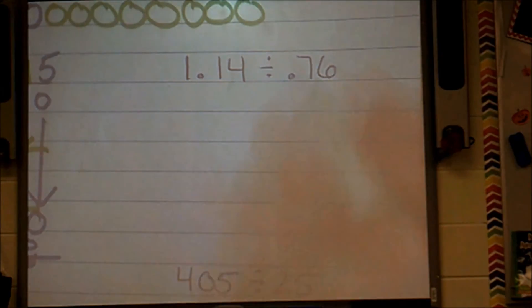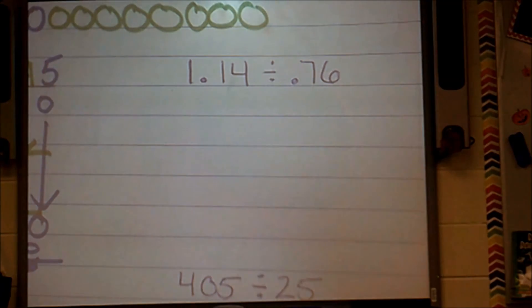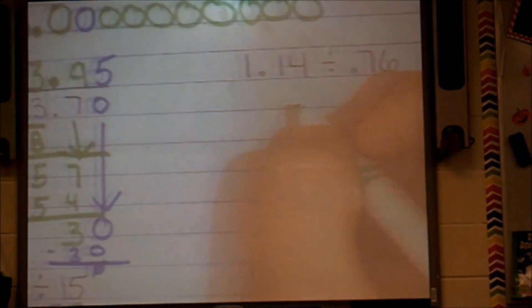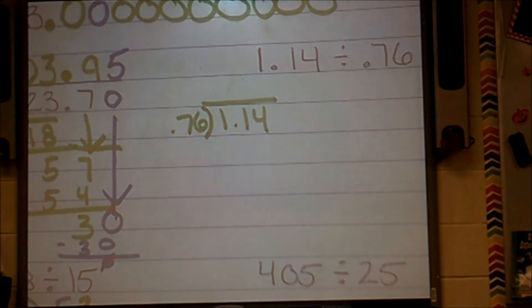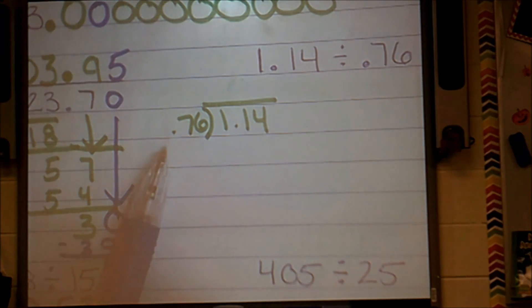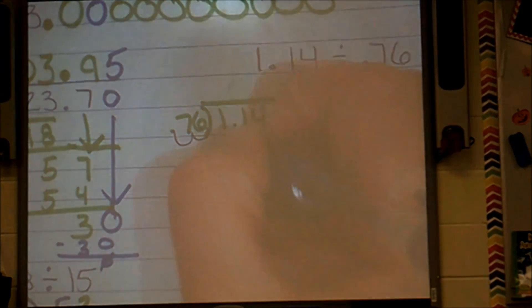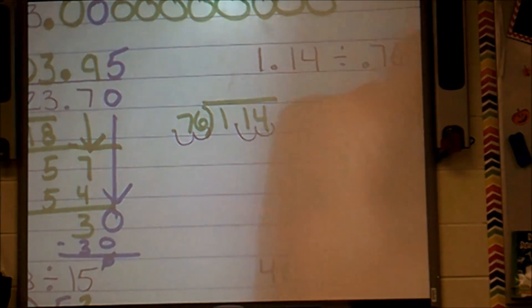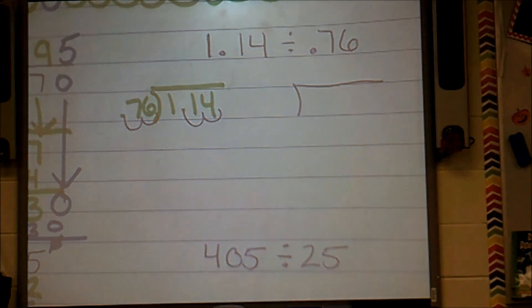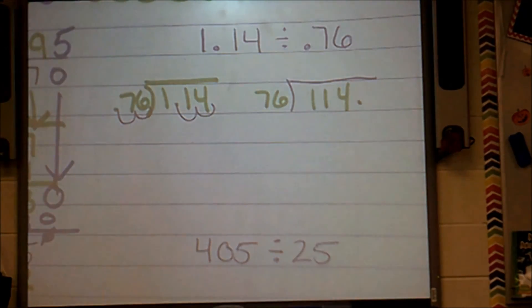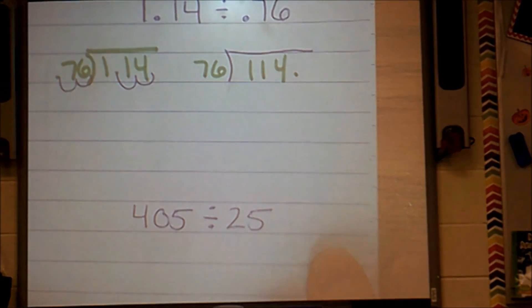And now I'm going to remember, my first number goes inside my cave, so my problem is written like that. Now I spy with my little eye a stinky smelly decimal in my divisor. I better get him out of here. Looks like he needs two bumps to get away from here, so I'll give two bumps to my other number. Just to make things a little bit nicer, I'm going to rewrite this problem. Well as you can see, this problem will be written like this: 114 divided by 76.